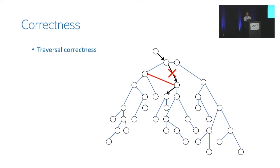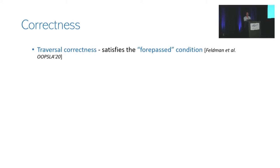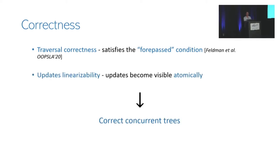As shown in the animation, because of the lack of synchronization, a traversal that encounters concurrent modifications of the tree might end up in the wrong location. To solve this, OCCUalyzer's localized copy-on-write protocol is designed to satisfy an existing proof of traversal correctness. It is designed so that the resulting concurrent trees satisfy a condition called ForPast, which was recently proved to imply the correctness of unsynchronized traversals. The combination of concurrent unsynchronized traversals and the atomicity of localized copy-on-write yields trees that are both highly scalable and correct.